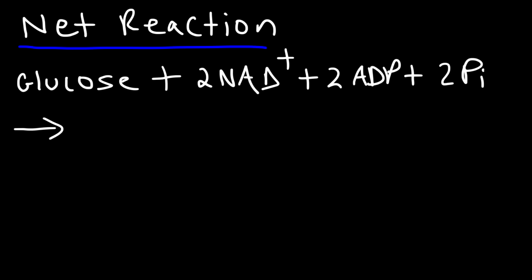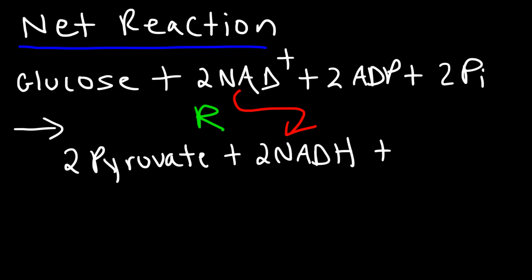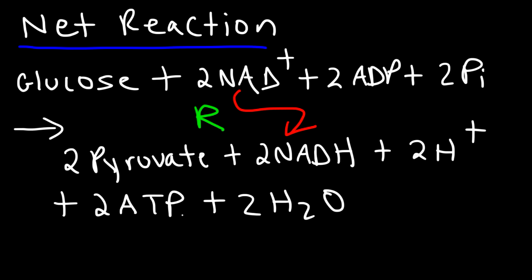This produces two molecules of pyruvate plus two molecules of NADH. Going from NAD+ to NADH — is that a reduction or oxidation process? Anytime you add a hydrogen to a molecule you're reducing it, so that is a reduction process. In addition to forming the two NADH molecules, two hydrogen ions will form and two units of ATP will be produced, converting ADP to ATP by addition of a phosphate unit. We'll also get two water molecules. That's the net reaction of glycolysis.